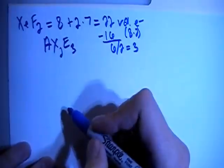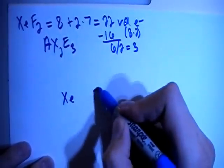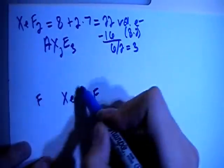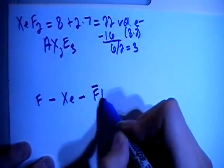So let's go ahead and draw this structure. You have the xenon in the center surrounded by the 2 fluorines, and let's go ahead and single bond them and fill in their octets.